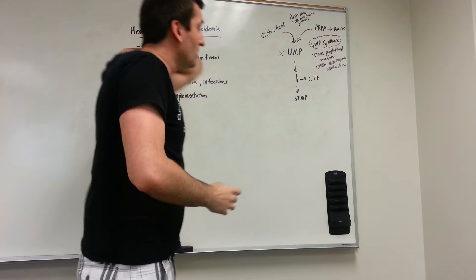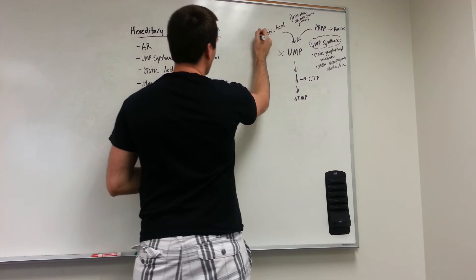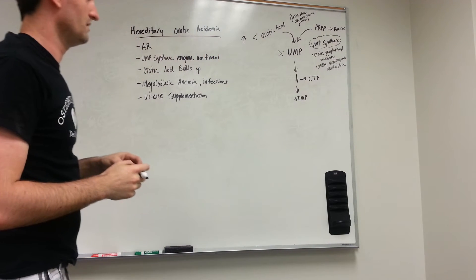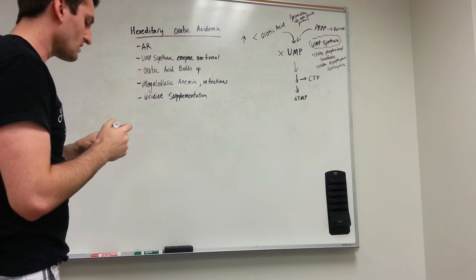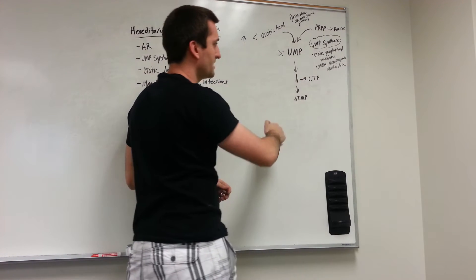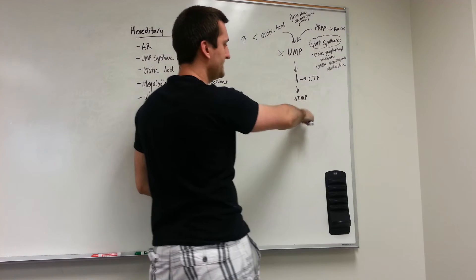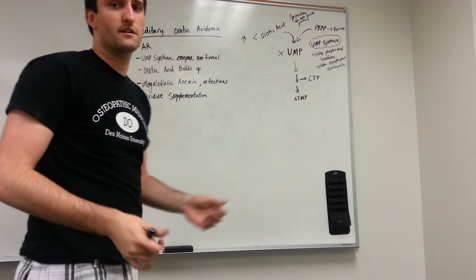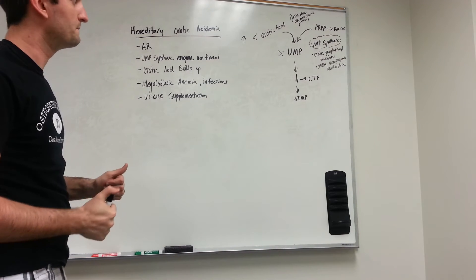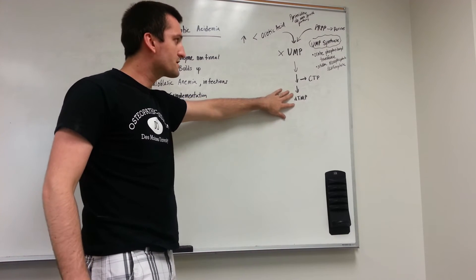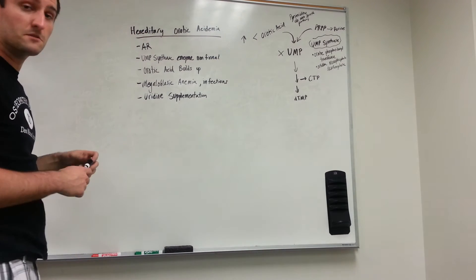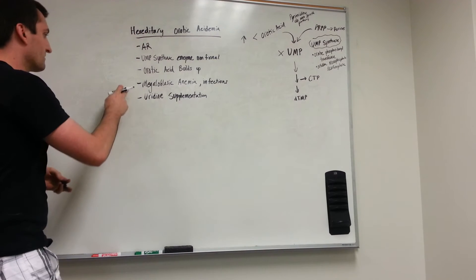Also note that if you're not able to make UMP, you're not able to make CTP or dTMP, which are both required for DNA synthesis and mitosis and DNA replication. If you're not able to make these precursors for DNA synthesis, that may explain some of the symptoms that we see with hereditary orotic acidemia.